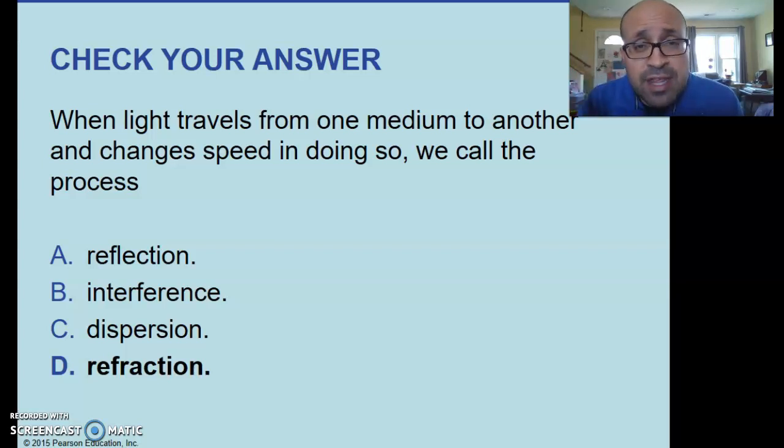Interference takes place with light. It can happen with anything that's a wave. It could be sound waves or anything. But with light, interference is possible as well. And this takes place when light rays, light waves are at the same place at the same time. You can get superposition, constructive, destructive interference.